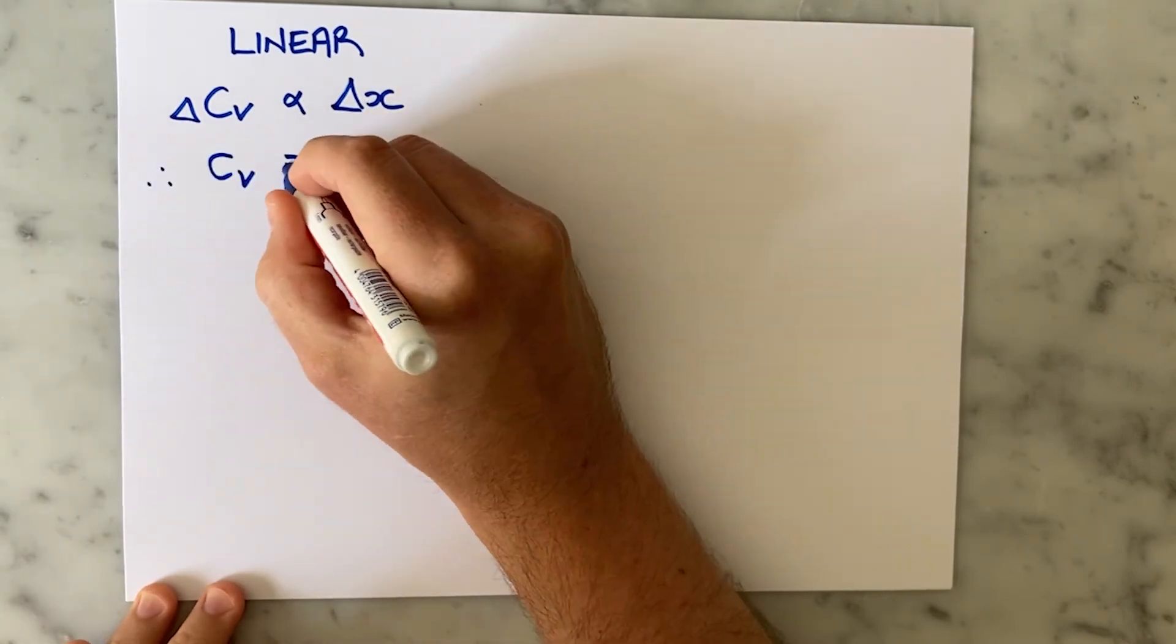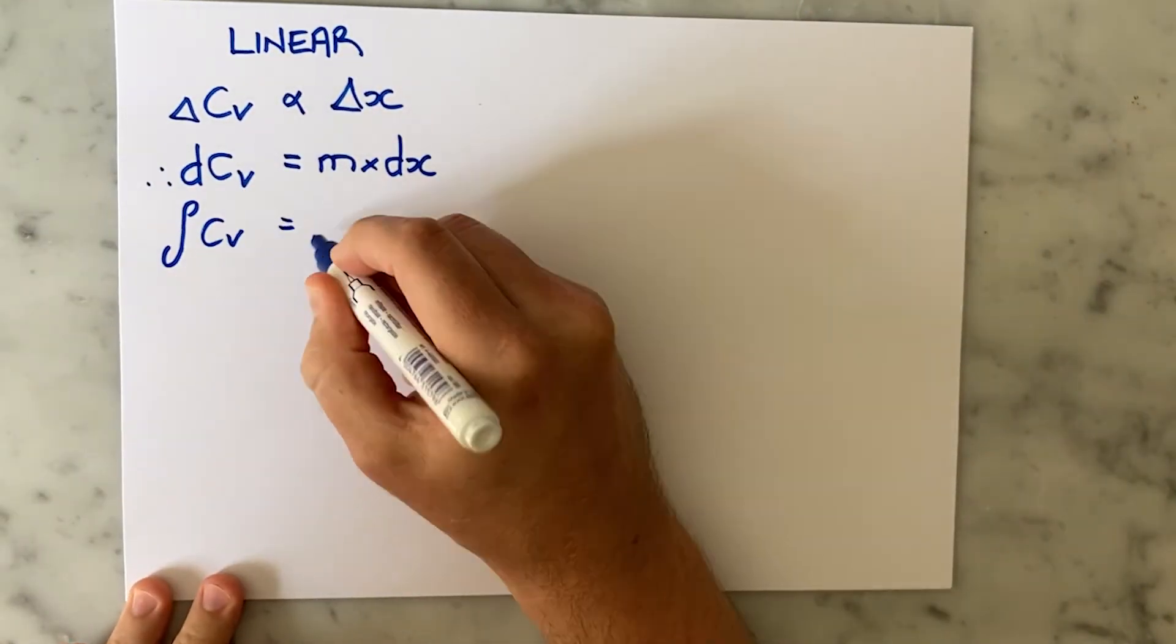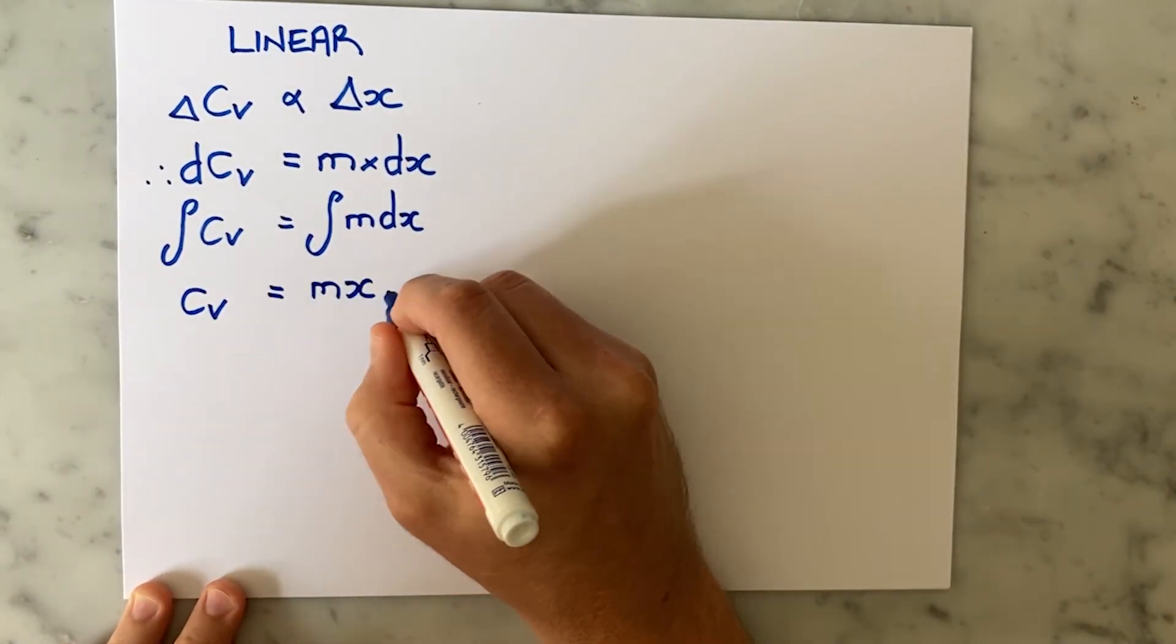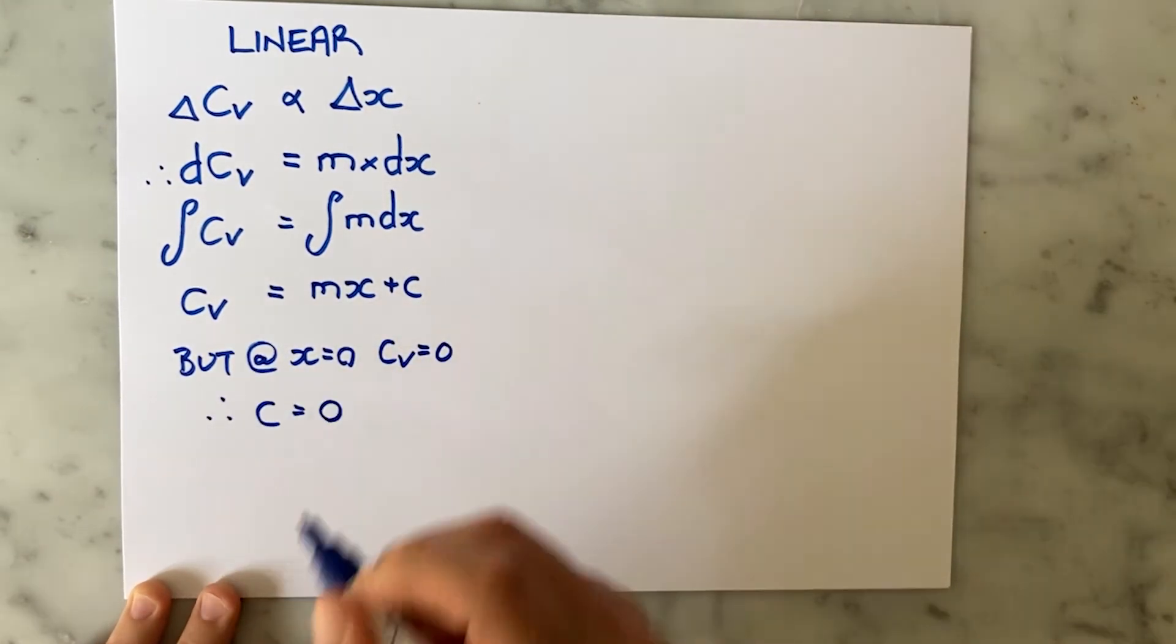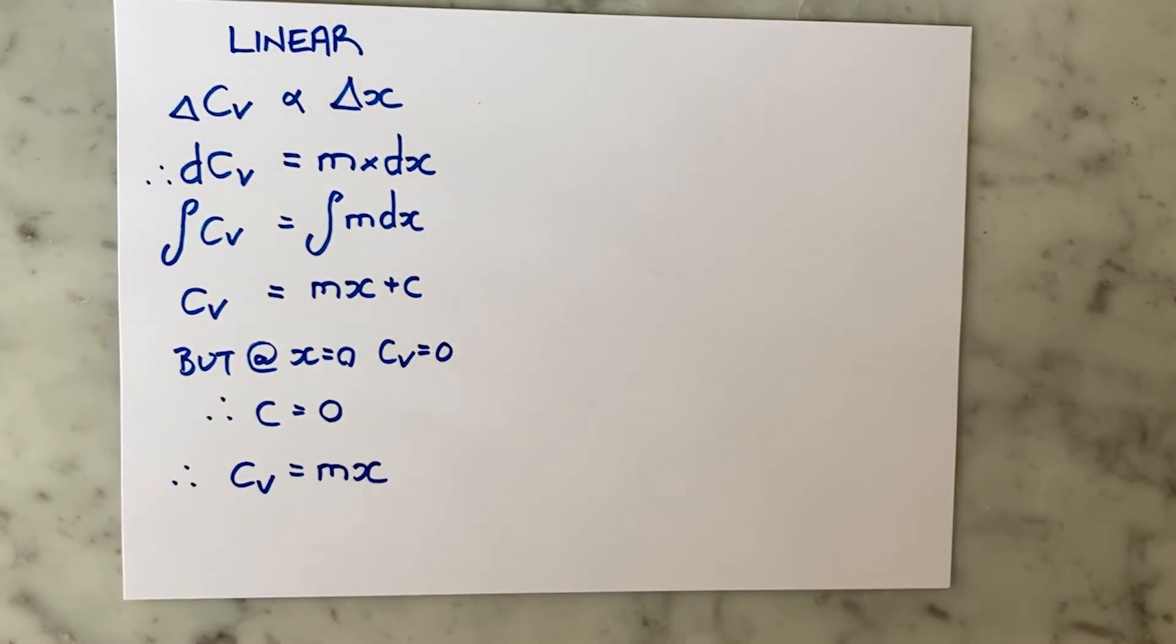For a linear valve, the change in CV is proportional to the change in valve opening. So we call the proportionality constant M and the constant of integration C simply equals 0 because we know that when the valve opening is 0 so is the CV, just like we said earlier.